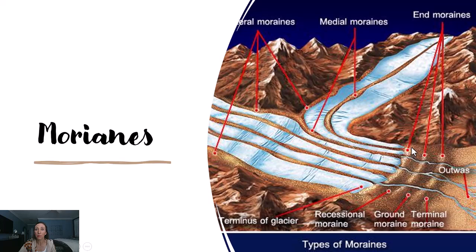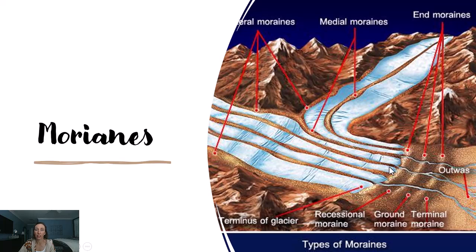You also get end moraines at the very end of the glacier. The glacier used to extend all the way out to the very last end moraine, which we call a terminal moraine. The ice would have sat there for a while, melting out material and letting it accumulate at the end. Then after a short recession — where the glacial ice moves back — another moraine forms, which we call a recessional moraine. There can be multiple recessional moraines, each marking a stage of retreat.